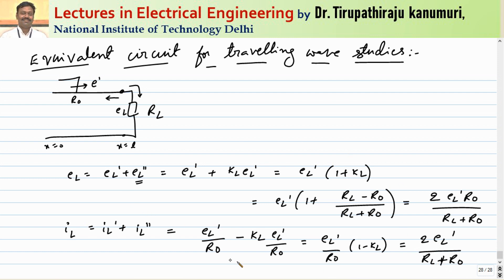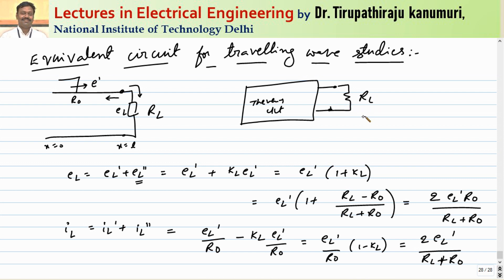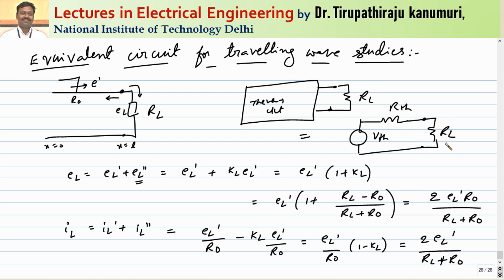Instead of repeating these calculations every time, if we can represent the transmission line with a Thevenin equivalent circuit, it will be much more helpful. The Thevenin equivalent has a voltage VTH in series with resistance RTH, and the load RL is connected at the terminals. We need to calculate both the Thevenin equivalent voltage and the Thevenin equivalent resistance.